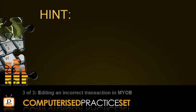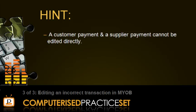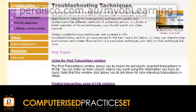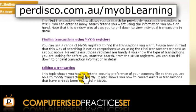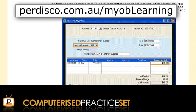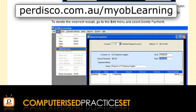Before we start, let me give you a hint. MYOB does not allow users to edit a customer payment or a supplier payment directly. Such transactions must be deleted or reversed. Since we are not using the reversing approach, we first need to delete the incorrect cash payment from the MYOB file and then enter the correct payment. To learn more about those steps, go to our Learning Centre, where you can find detailed instructions on how to modify a cash payment and other items on a partly paid invoice.